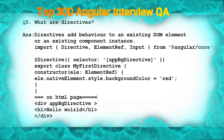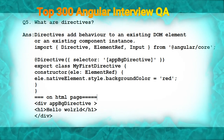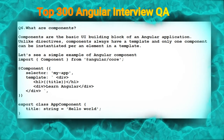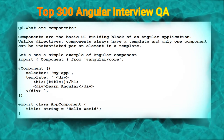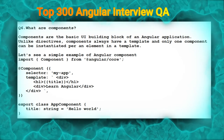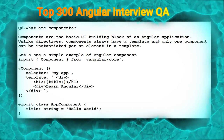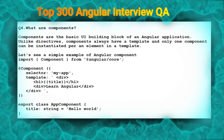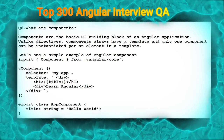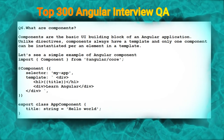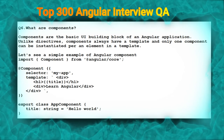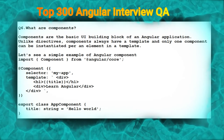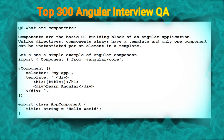The next question is: what are components? Components are the basic building blocks of an Angular application. Unlike directives, components always have a template, and only one component can be instantiated per element in a template. For example, we import Component from core, then decorate the component class with the @Component decorator. Inside the decorator there is a selector, and then a template — which can be an inline template or a templateUrl pointing to a separate HTML file.